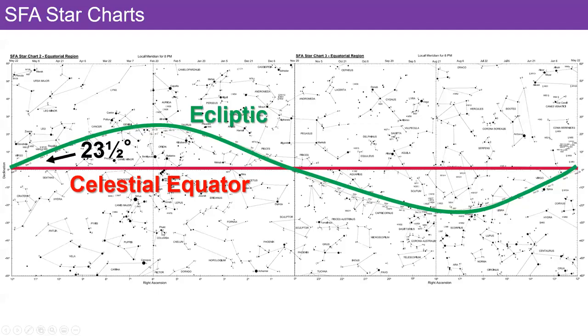That is also represented on our star charts, two and three, and the ecliptic, which is a map of the celestial equator region of the celestial sphere. And there's that 23 and a half degrees, the angle between the ecliptic and the celestial equator.